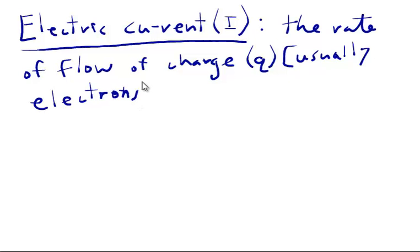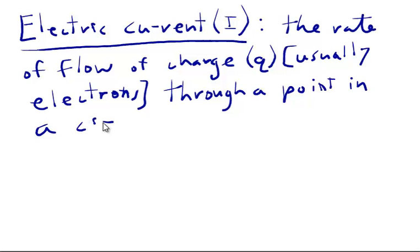I'll use electrons through a point in a circuit. If we look at an equation for this, the equation would look like I current equals rate. So we know it's going to be over time. And on top we have Q.